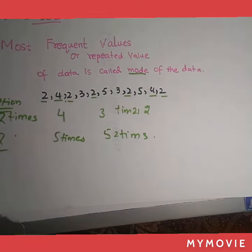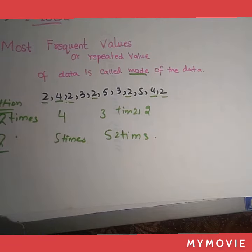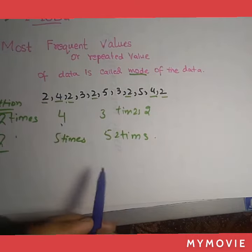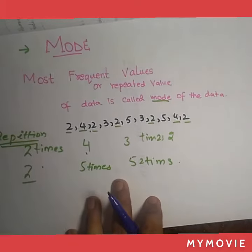The mode for the function is two, because two is repeating the most times. The repetition of two is greater than four, three, and five. Hope you get it.